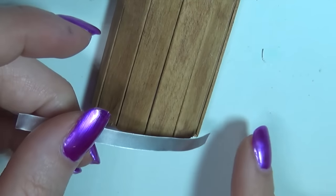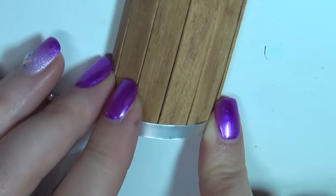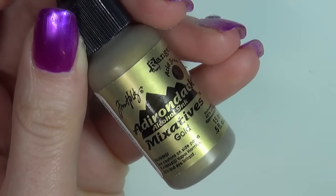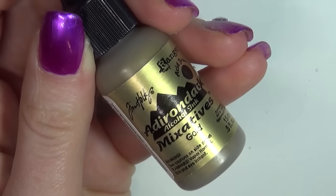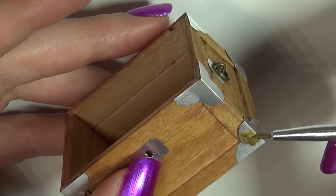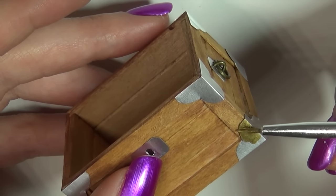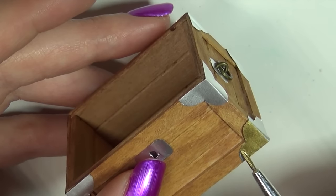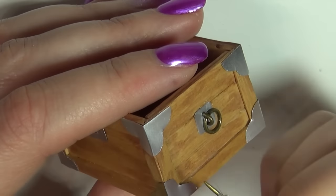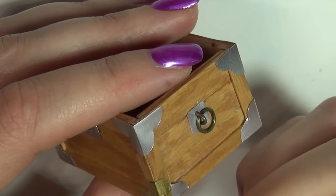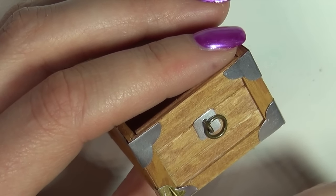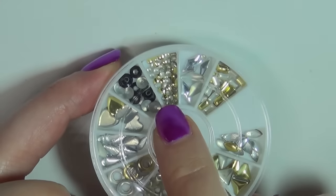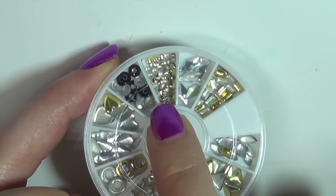For the lid, you're going to glue on a strip of metal to each side. I wanted my metal parts to be gold, so I used some alcohol ink to color it. Then I used some gold nail art studs, and glued those onto the metal parts.